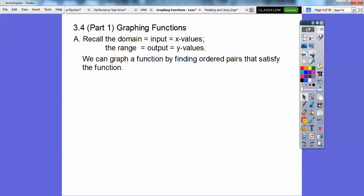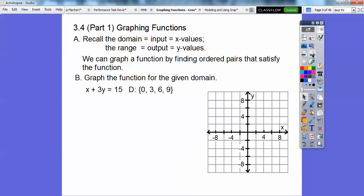We can graph a function by finding ordered pairs that satisfy the function. So that's what we're going to do in this lesson. Let's graph this function, x plus 3y equals 15, given the domain. Remember, these are our x values. Our domain is 0, 3, 6, 9.